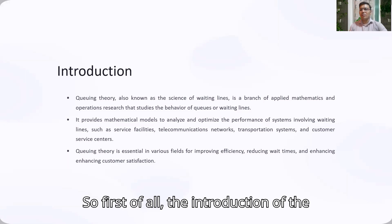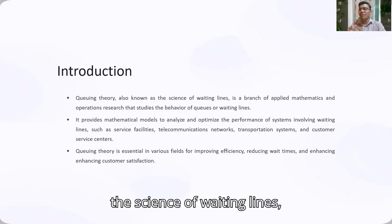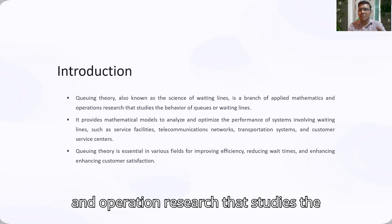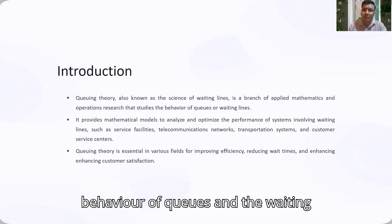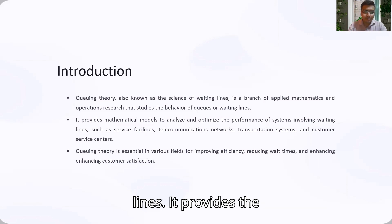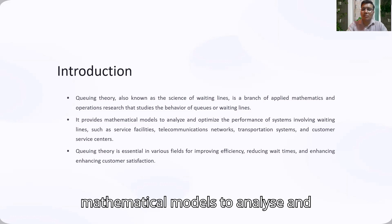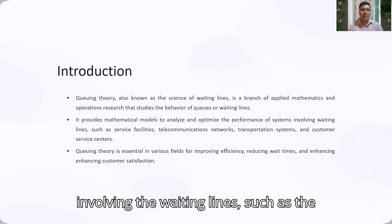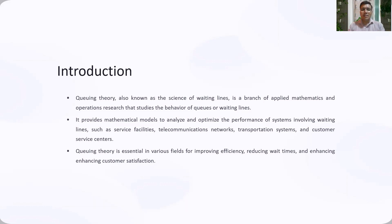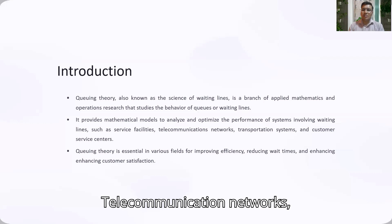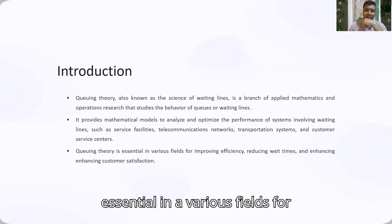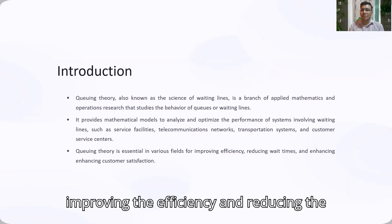First of all, the introduction of queuing theory. Queuing theory, also known as the science of waiting lines, is a branch of applied mathematics and operations research that studies the behavior of queues and waiting lines. It provides mathematical models to analyze and optimize the performance of systems involving waiting lines, such as service facilities, telecommunication networks, transportation systems, and customer service centers.